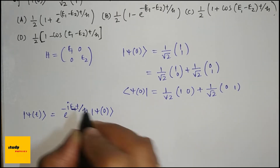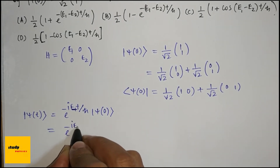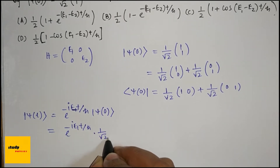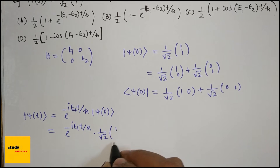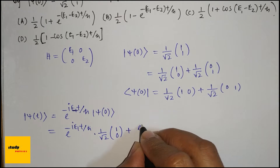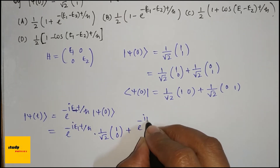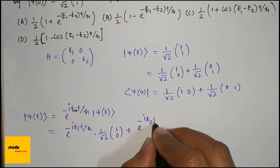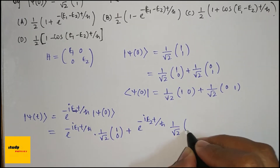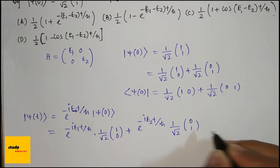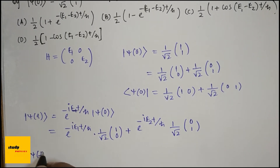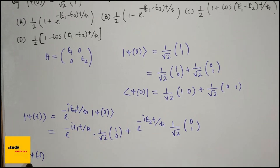This means psi of t equals e to the power minus i E1 t divided by h-bar, times 1 over root 2, times (1, 0), plus e to the power minus i E2 t divided by h-bar, times 1 over root 2, times (0, 1).